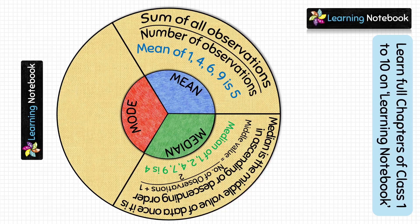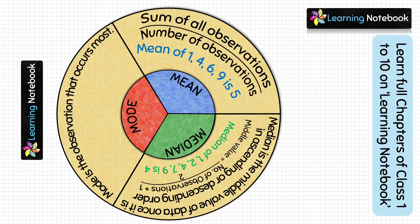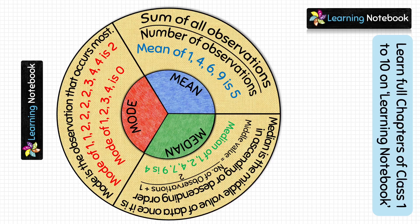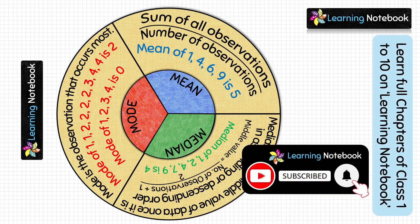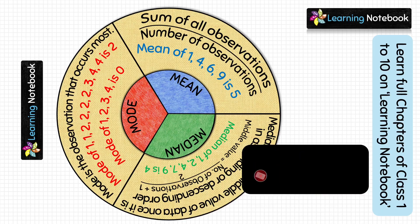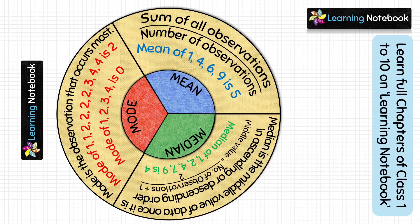Lastly, write about mode. Mode is the observation that occurs most in the given data. For example, the mode of a dataset where 2 appears most often is 2. We can also write: the mode of 1, 2, 3, 4, 4 is 4. So we have written about mean, median, and mode on the yellow circle.